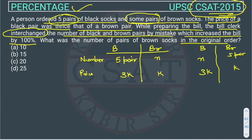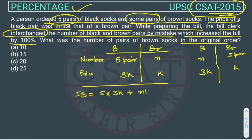The clerk interchanged not the price but the number of black and brown pairs by mistake, which increased the bill by 100 percent. Now we calculate the initial bill. The initial bill will be: 5 pairs of black at price 3k, plus n pairs of brown at price k, giving 15k + nk.